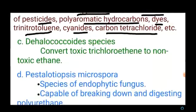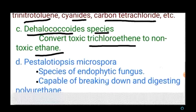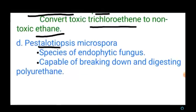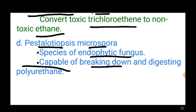Dehalococcoides species convert the toxic trichloroethane to non-toxic ethane. Pestalotiopsis microspora is a species of endophytic fungus that has the capacity to break down and digest polyurethane, making it a potential candidate for bioremediation projects involving large quantities of plastics.